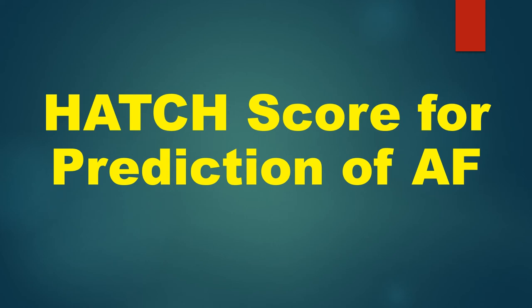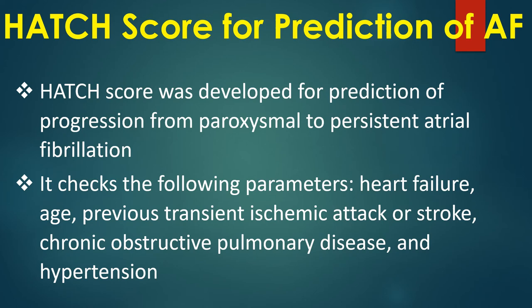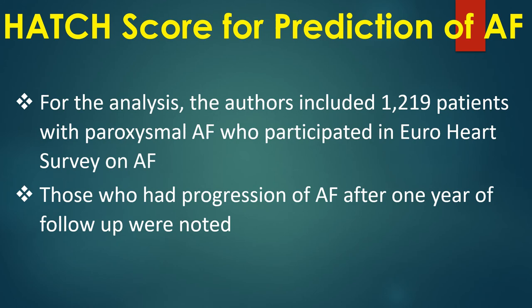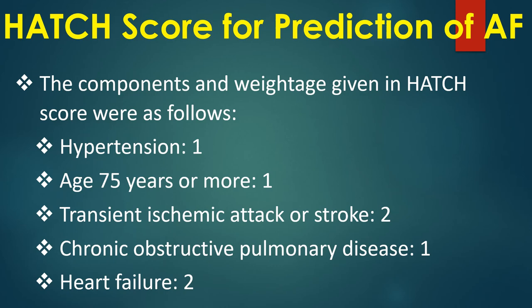HATCH score was developed for prediction of progression from paroxysmal to persistent atrial fibrillation. It assesses the following parameters: heart failure, age, previous transient ischemic attack or stroke, chronic obstructive pulmonary disease, and hypertension. The authors included 1,219 patients with paroxysmal AF from the EuroHeart survey on AF. Those who had progression of AF after 1 year of follow-up were noted, and the components and weightage of the HATCH score were derived.